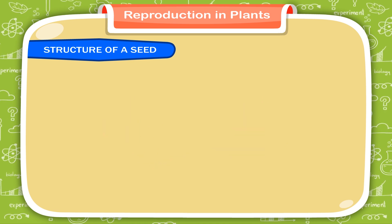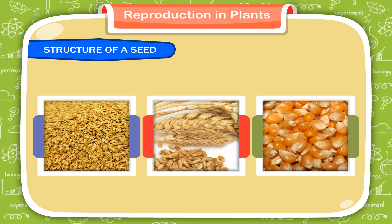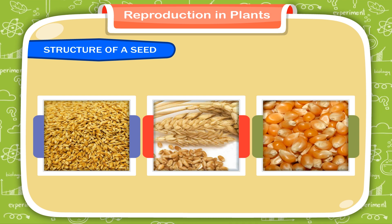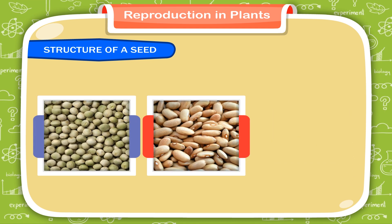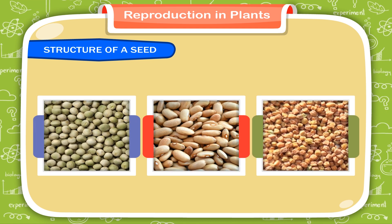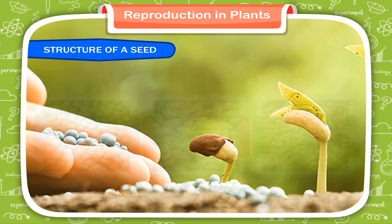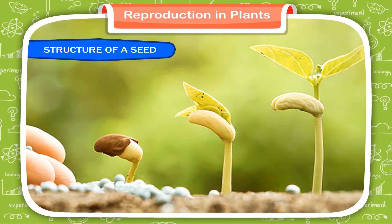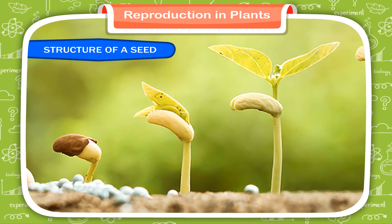Some seeds like rice, wheat, and maize have only one seed leaf, whereas seeds like peas, beans, and grams have two seed leaves. The baby plant remains inside the seed till it gets favorable conditions to grow.